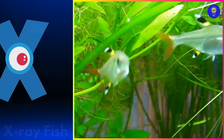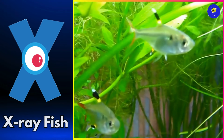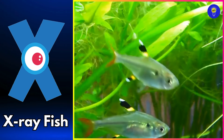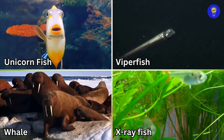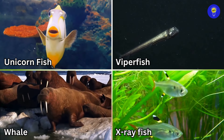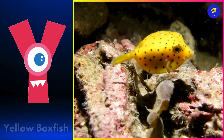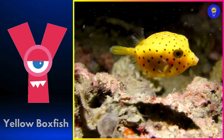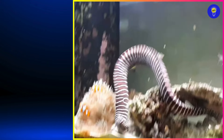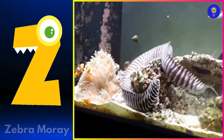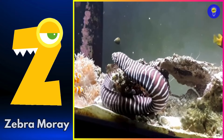X is for x-ray fish. Y is for yellow boxfish. Z is for zebra moray.